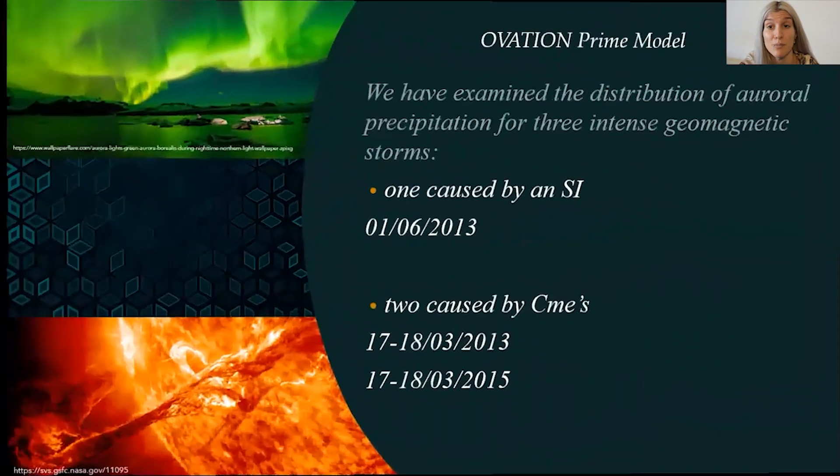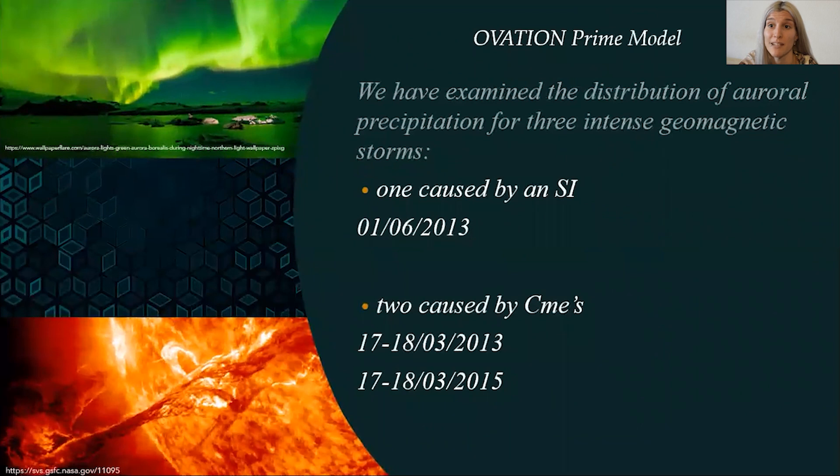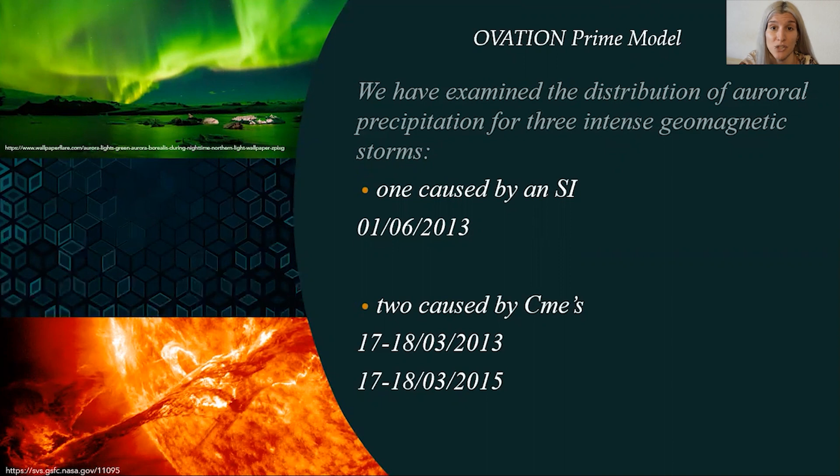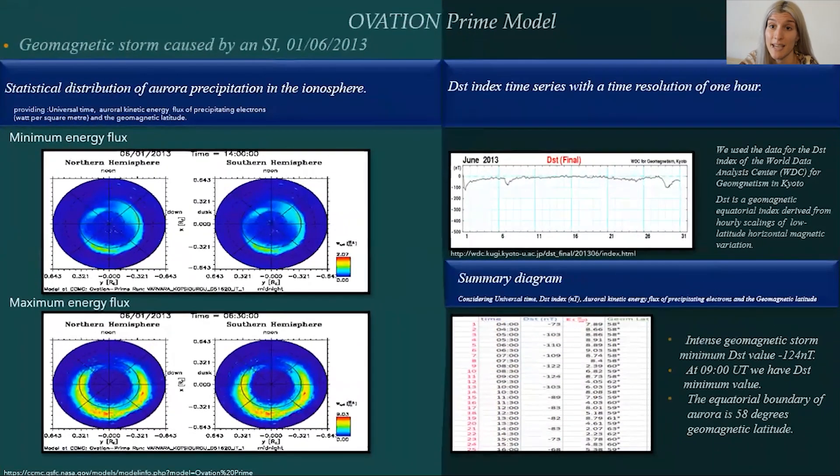We have examined the distribution of aurora precipitation for three intense storms, one caused by a stream interaction region and two caused by coronal mass ejections. Let's turn to our first case, the geomagnetic storm caused by SI at the 1st of June of 2013.